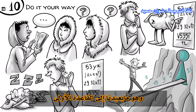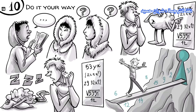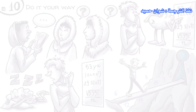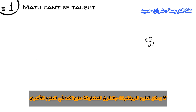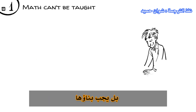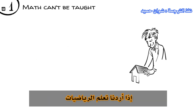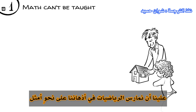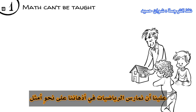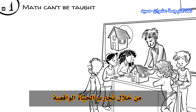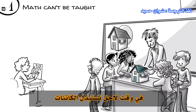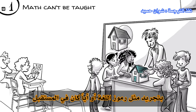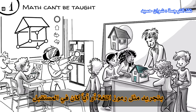Which brings us back to rule 1: math can't be taught — it has to be constructed. If we want to learn math, we have to do math in our heads, ideally with real-life experiences. Later, we replace the objects with abstractions, such as language, symbols, or whatever the future might bring.